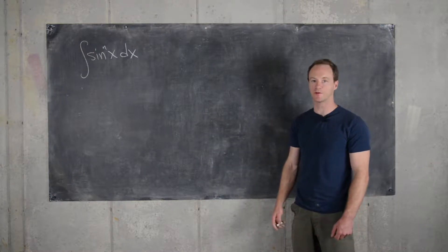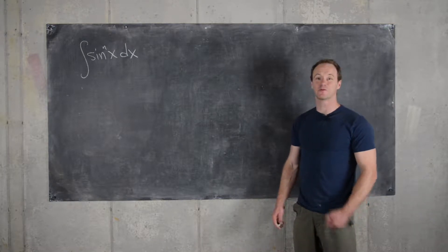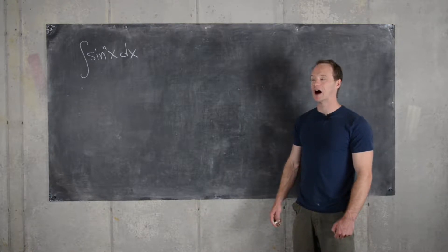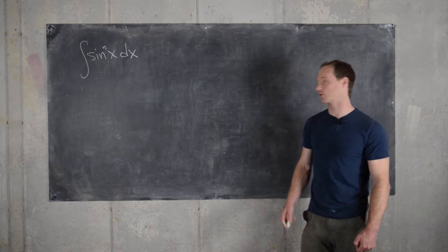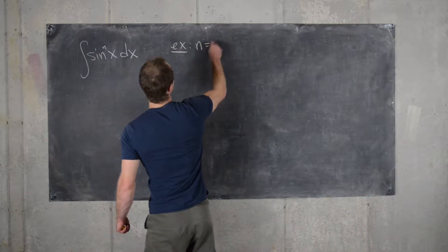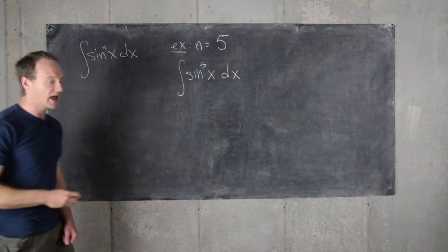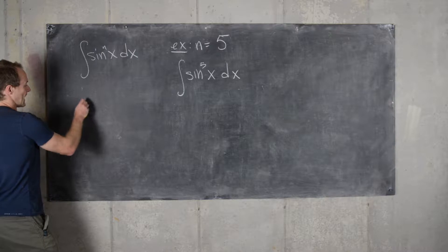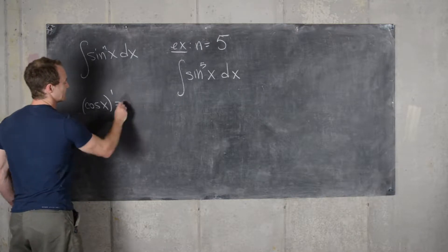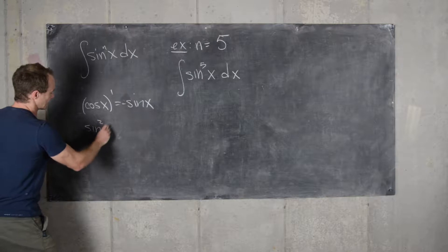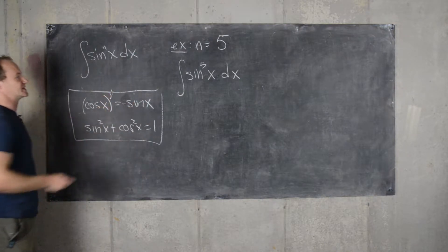Here we're going to look at a power-reducing formula for the integral of the nth power of the sine function. In practice, if n is a relatively small odd number, you're probably better off not using this power-reducing formula and just doing it by hand with substitution. Let's look at an example of that. If n equals 5, we have the integral of sine to the 5th x dx. We can simplify that by using the fact that the derivative of cosine of x equals negative sine of x, and that sine squared of x plus cosine squared of x equals 1.